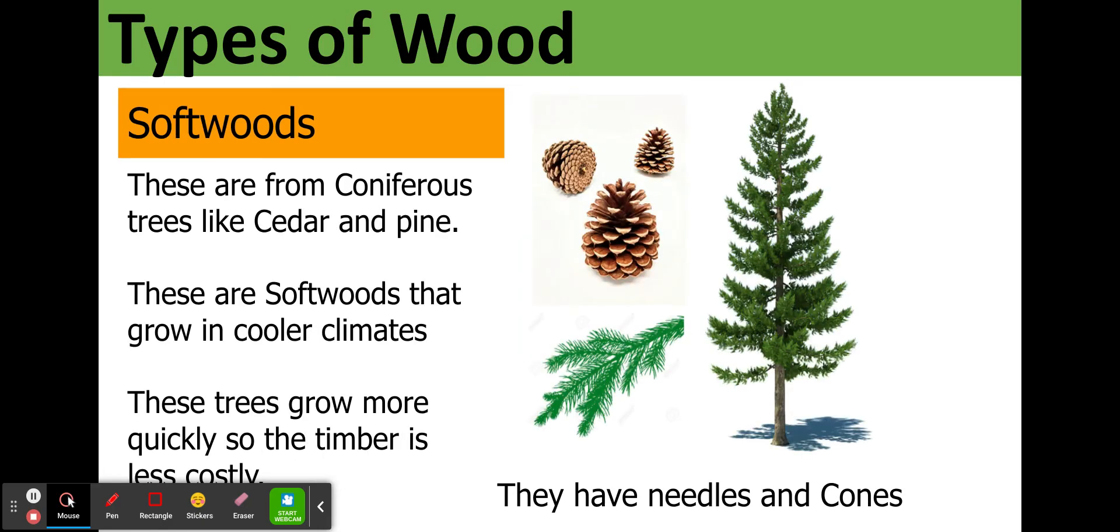Softwoods are from coniferous trees like cedar and pine. These are softwoods that grow in cooler climates. These trees grow more quickly so the timber is less costly. They have this characteristic shape and they have needles and cones.